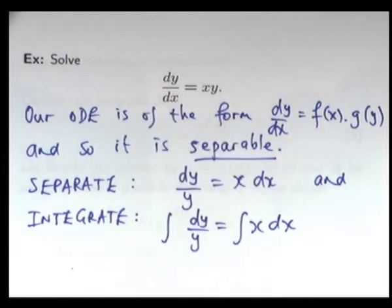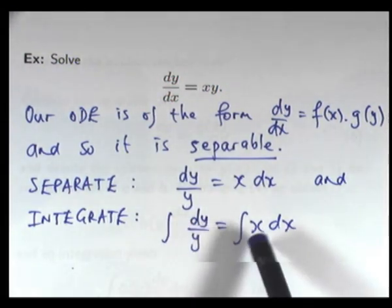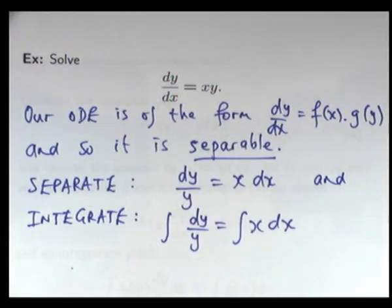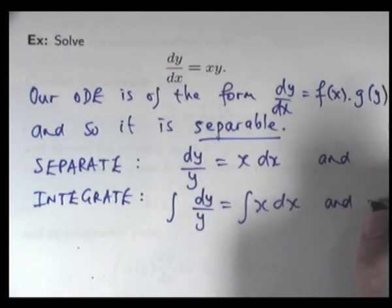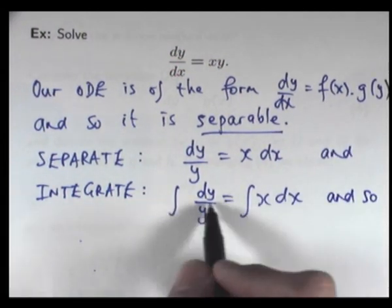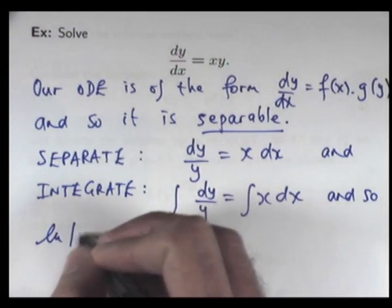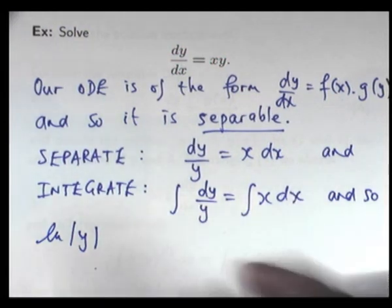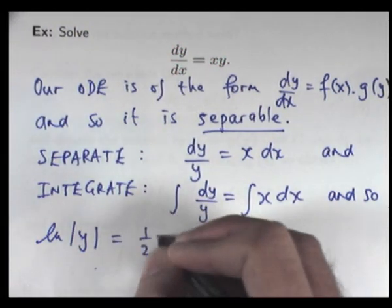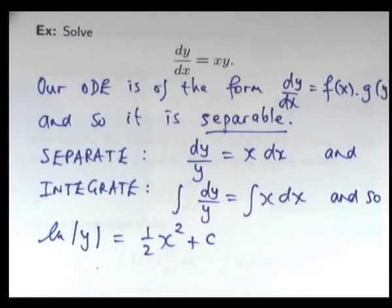On the left-hand side, I'm integrating with respect to y. On the right-hand side, I'm integrating with respect to x. And so, the left-hand side is going to give us log y absolute. The right-hand side is going to give us a half x squared plus a constant.